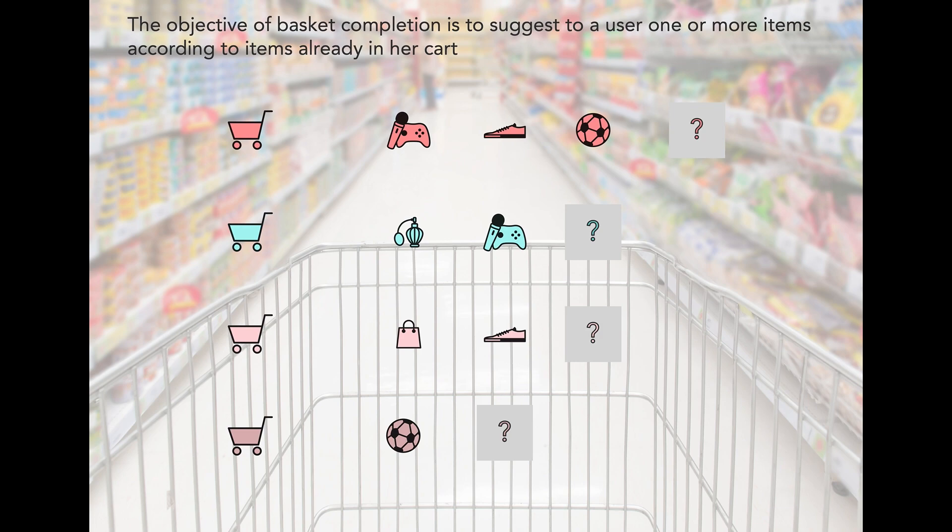Given a populated basket of items, our prediction task is to recommend one or more items to complete the basket based on the items that we observe in the populated basket.